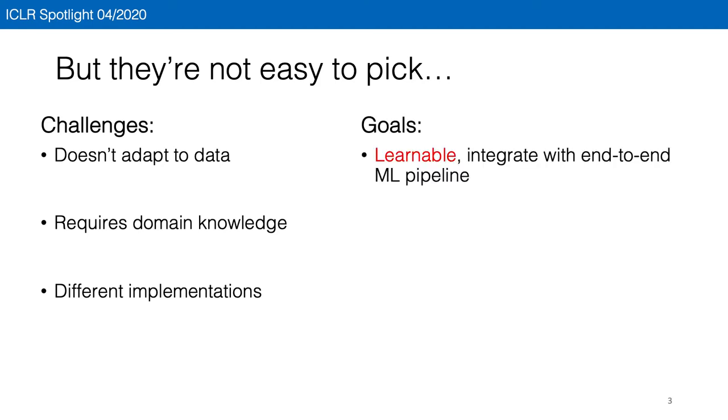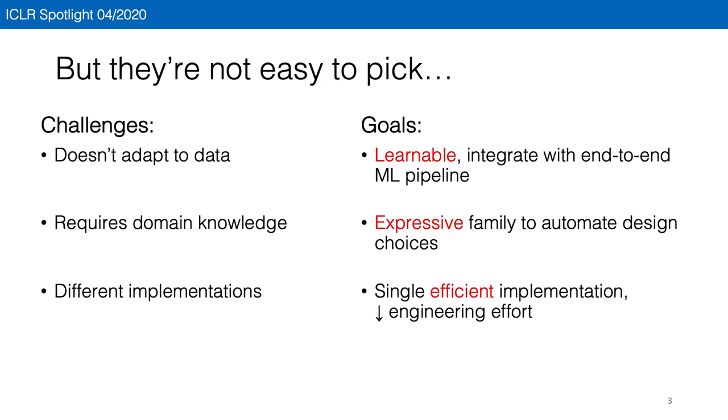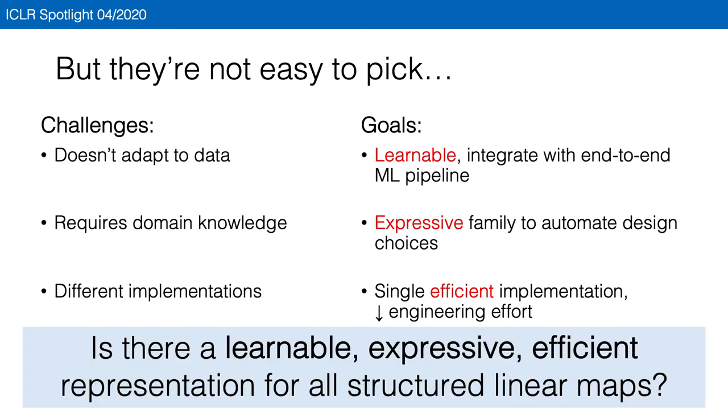To address these challenges, we want a family of structural linear maps that's learnable and adapts to the rest of the machine learning pipeline. This family should be expressive enough to represent common structures so that we can automate these design choices, and it should have a single efficient implementation that reduces engineering effort. This brings us to the question: is there a learnable, expressive, and efficient representation for all structural linear maps?